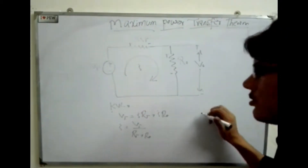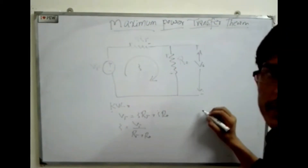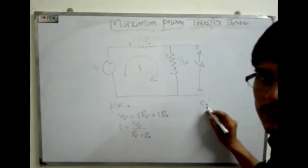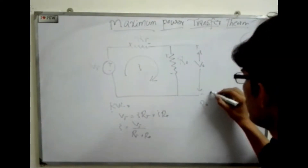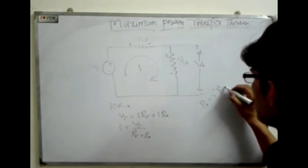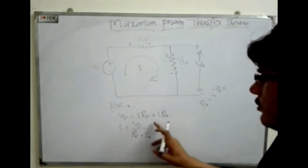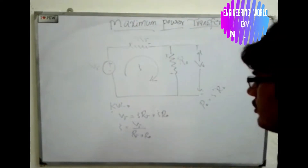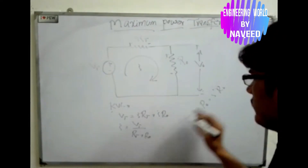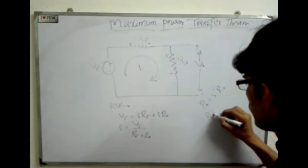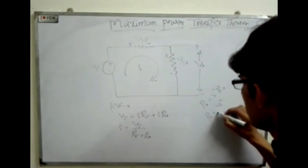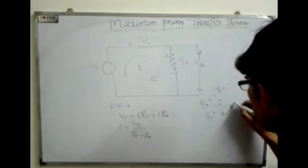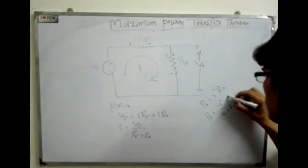So I will be equal to Vt divided by (Rp + Rn). Now let's look at the power dissipated in Rn. Pn represents the power of the output: Pn = I²·Rn. Substituting the value of I, we get Pn = Vt² · Rn divided by (Rp + Rn) whole squared.